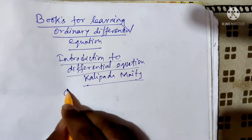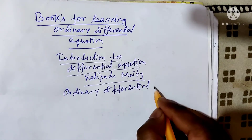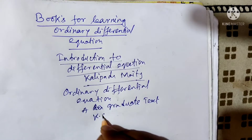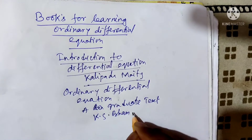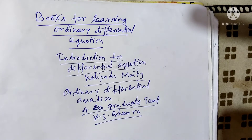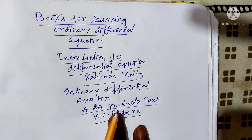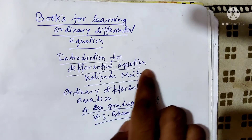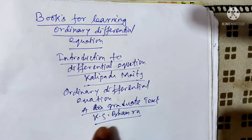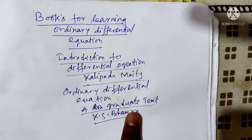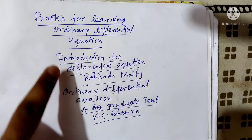Next book, also by an Indian author: 'Ordinary Differential Equations: A Graduate Text' by K.S. Bhamra. This is also a great book for graduate students. If you want to learn differential equations, this is also a great book. Both — Kalipada Maity's 'Introduction to Differential Equations' and K.S. Bhamra's 'Ordinary Differential Equations: A Graduate Text' — have PDFs available. I think if you are a first learner, you should try these.